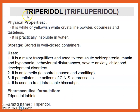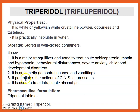Next drug is Triperidol, also called Trifluperidol. Physical property: it is a white or yellowish microcrystalline powder, odorless and tasteless, practically insoluble in water. Uses: it is a major tranquilizer used to treat active psychosis, mania and hypomania, behavioral disturbances, severe anxiety, and childhood developmental disorders. It is also an anti-emetic. It potentiates the action of CNS depressants and is used to treat intractable hiccups. Pharmaceutical formulation: Triperidol tablet. Brand name: Triperidol.